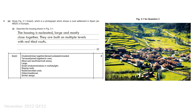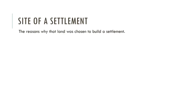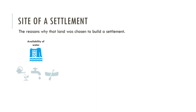The second question from these past questions looks at the reasons for the original site and growth of the settlement. When it comes to the site of a settlement, we need to remember that the site refers to the reasons why that land was chosen to build a settlement. We're looking for clues about why people many years ago chose to build a settlement there.